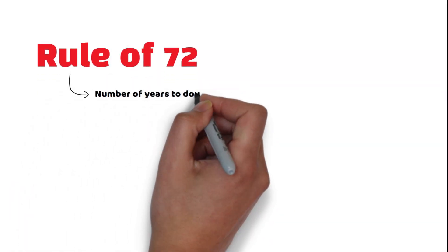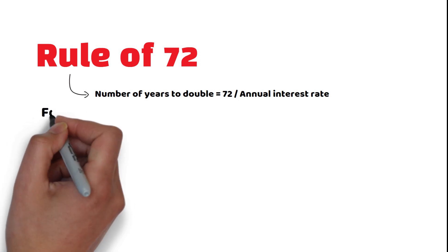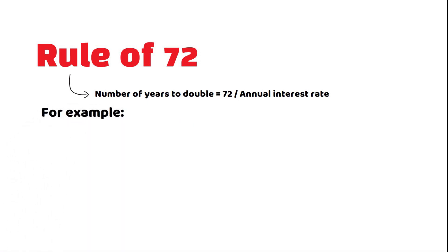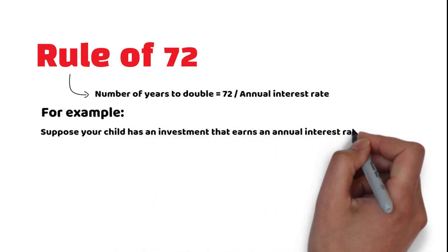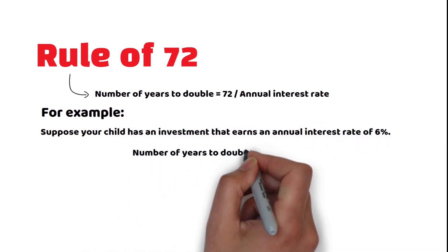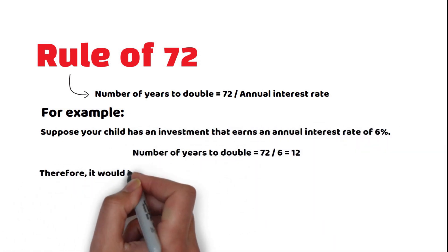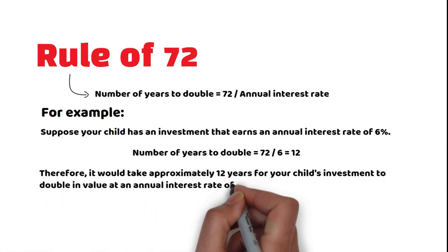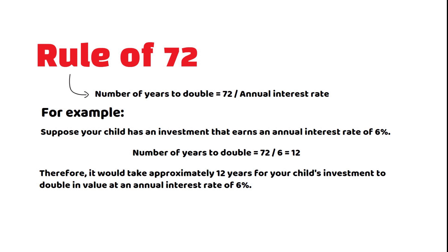Number 3: The Rule of 72. The Rule of 72 is a simple formula that helps estimate how long it takes for an investment to double in value, given a fixed annual interest rate. To use this rule, divide 72 by the annual interest rate, expressed as a percentage. The result is the approximate number of years it will take for the initial investment to double. For example, if your child's investment earns an annual interest rate of 6%, it would take approximately 12 years for their money to double.